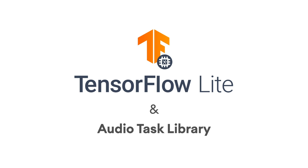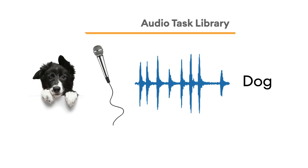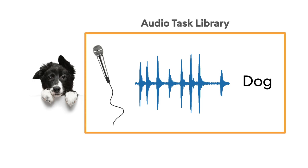Coming back to our example, let's see how TensorFlow Lite and the Audio Task Library can help. TensorFlow Lite can convert the TensorFlow module and enables its execution on the phone, for example. The Audio Task Library can create the audio recorder with the correct configuration for your model. It also can convert the audio to the format that your pre-trained audio module requires, and it also gives you a simpler API to access the module.